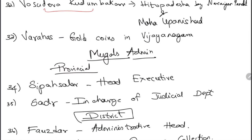The phrase 'Vasudhaiva Kutumbakam' is taken from the Maha Upanishad; for the first time it was written in a book called Hitopadesha, written by Narayana Pandita. Varahas were gold coins in the Vijayanagara Empire.